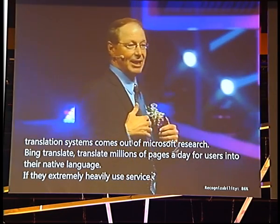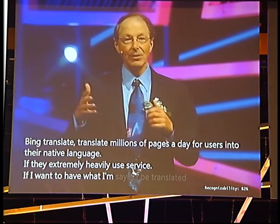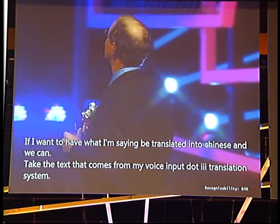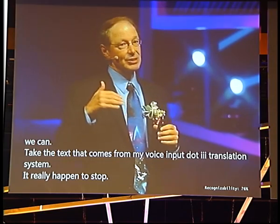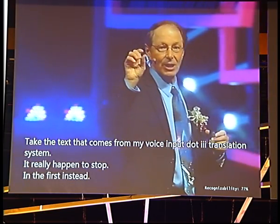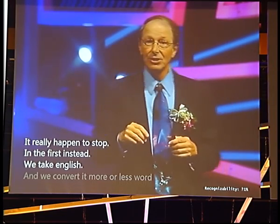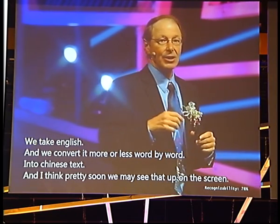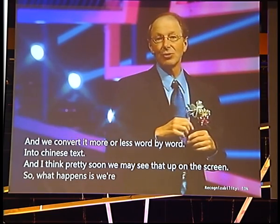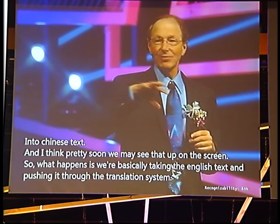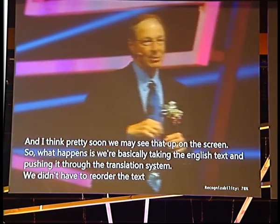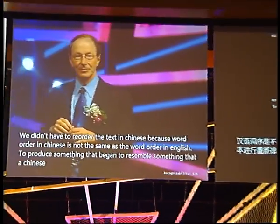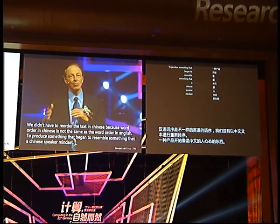If I want to have what I'm saying translated into Chinese, we can take the text from my voice and put it through a translation system. It really happens in two steps. In the first step, we take the English and convert it more or less word by word into Chinese text. We then have to reorder that text in Chinese, because the word order in Chinese is not the same as in English, to produce something that begins to resemble what a Chinese speaker might say.